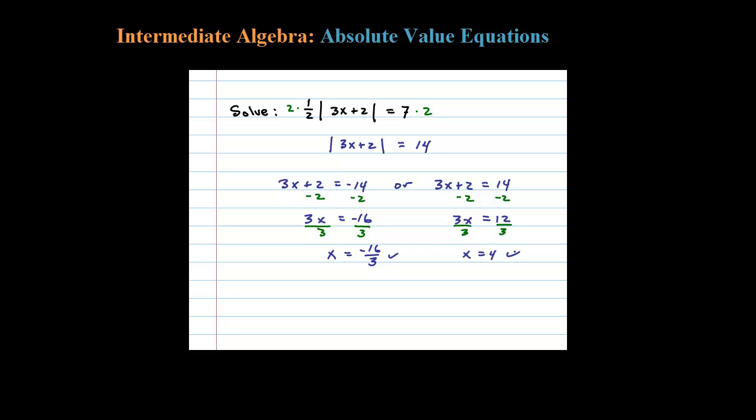The second solution: here we would first subtract 2, so 3x equals 12. Dividing by 3, then x equals 4. So here we have two solutions: negative 16 thirds and 4. What you can do is substitute those back into the original to see if they work as a check.